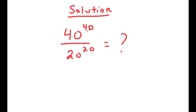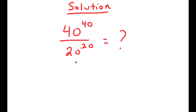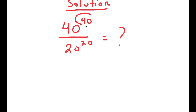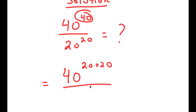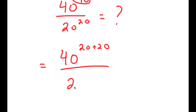And I'm going to rewrite this 40 — my exponent 40 — as 20 plus 20. So I get 40 to the power of 20 plus 20 over 20 to the power of 20.